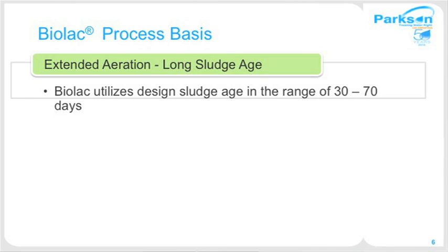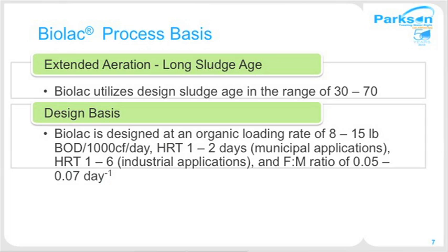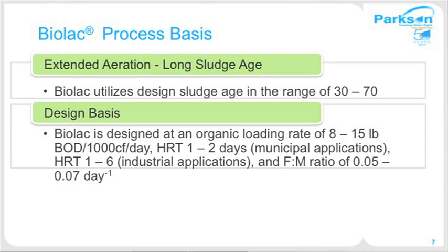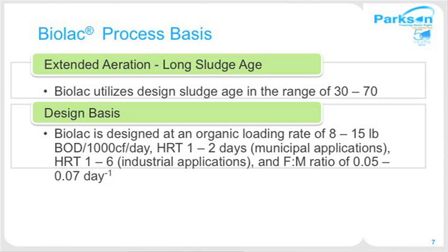Some of the design bases for the BioLac process: it's an extended aeration, long sludge age process. The sludge age or MCRT for the BioLac process is 30 to 70 days. The organic loading is typically around 8 to 15 pounds of BOD per thousand cubic feet of volume per day. It's a longer hydraulic retention time of one to two days, and in some industrial applications the HRT can go up to six days. Food to microorganism ratio is within the typical extended aeration range: 0.05 to 0.07 pound of BOD per pound of biomass.